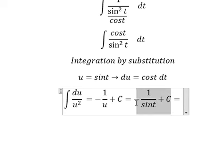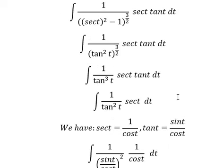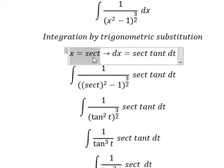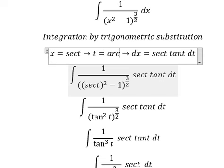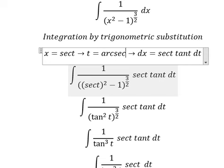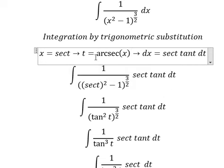That is this one. We can find the value of t—that is arcsecant of x. So I will put this one to change for t.